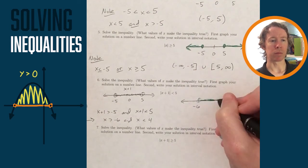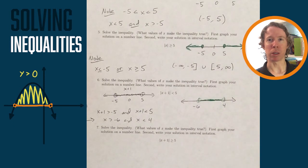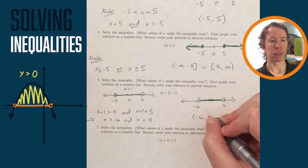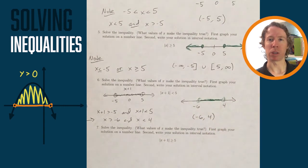And then for interval notation, just open parenthesis negative 6, comma 4, close the parenthesis. Negative 6 and 4 aren't included, so we're not using brackets there.